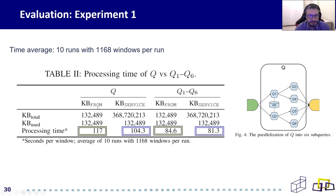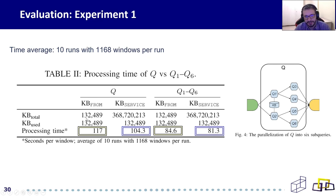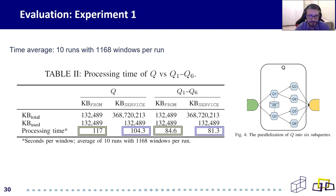In experiment one, the results show that we managed to reduce the average processing time per window from 117 seconds to 84.6 seconds when each operator is accessing the knowledge base locally. And when we centralized the knowledge base and all operators accessed it through the SPARQL endpoint, we managed to reduce from 104.3 seconds to 81.3 seconds.